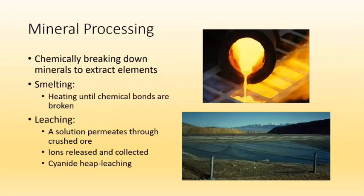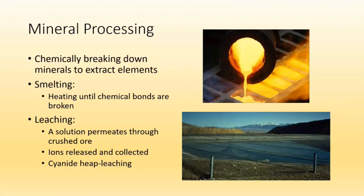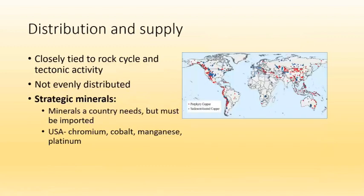Once material is out of the ground, you need to extract the element or mineral. One method is smelting — heating until chemical bonds break, then chemically separating and extracting the target element. Another commonly used method is heap leach mining: you crush the ore, place it in a lined pit, and spray the whole thing with cyanide. The cyanide leaches out the elements of interest, but giant pits of cyanide present obvious potential environmental issues.